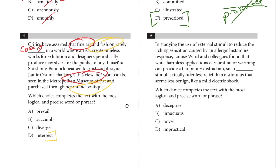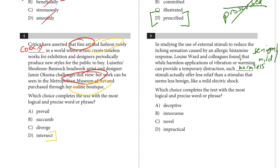Number six: Louise Ward and colleagues found that while harmless applications of vibration or warming can provide a temporary distraction, such blank stimuli actually offer less relief than a stimulus that seems less benign. So these stimuli are harmless — maybe mild, benign, or innocuous — because they offer less relief than something that seems less benign, less mild, less harmless. The answer is 'innocuous.' You can look in a thesaurus and find all those words grouped together.